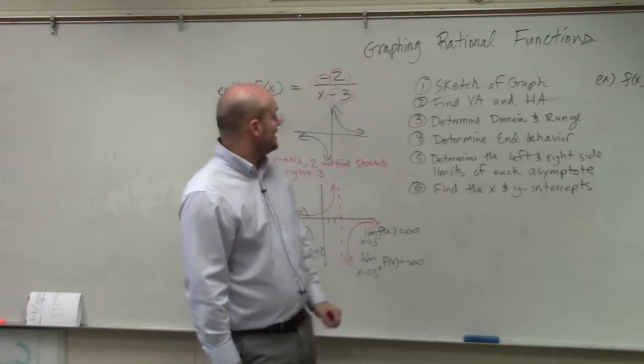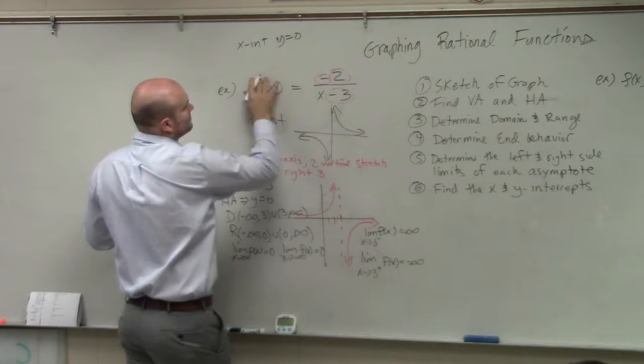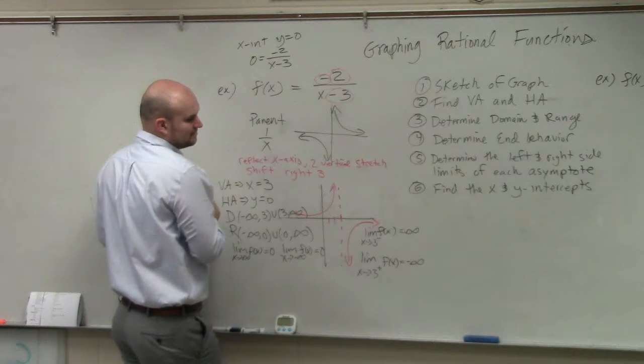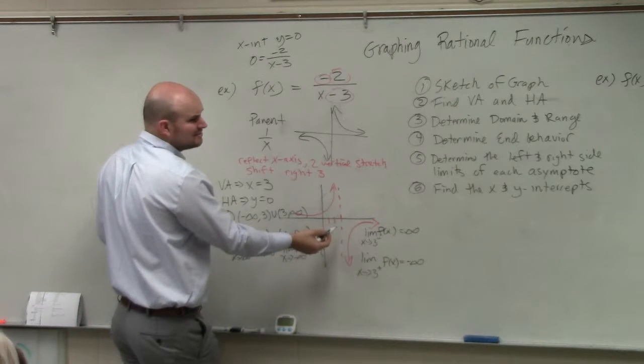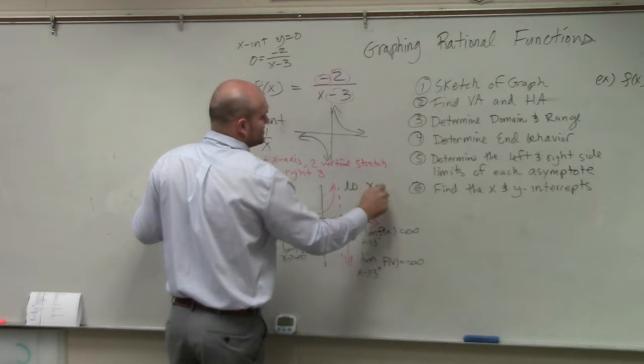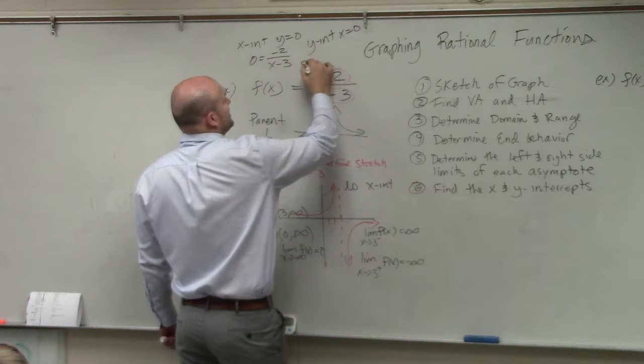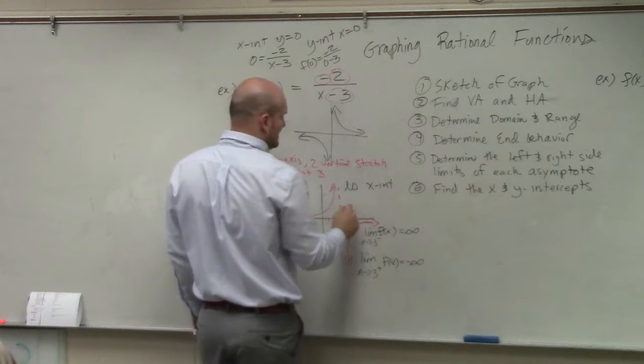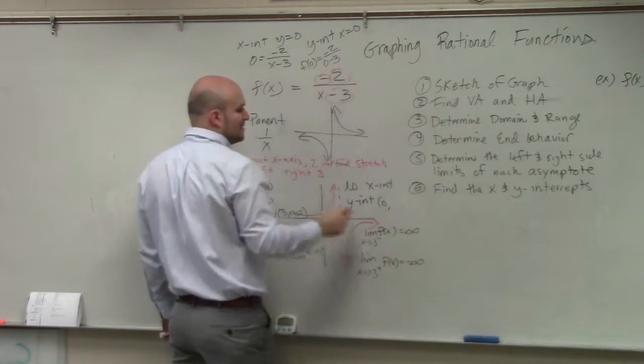And then last but not least, you have the x and y-intercepts. So to find the x-intercept, y equals 0. So you do 0 equals negative 2 over x minus 3. And obviously, you guys can see, is there any x-intercept here? Is there any x-intercept in this graph? No. So no x-intercept. To find the y-intercept, x equals 0. So it'd be f of 0 equals negative 2 divided by 0 minus 3. And the y-intercept is 0 comma, negative 2 divided by negative 3 is 2 thirds.